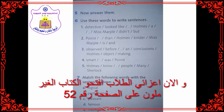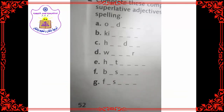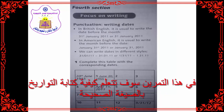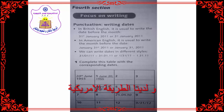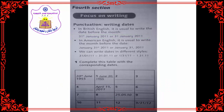Now, my dear students, please open your activity book on page 52. We will work with exercise number 1. In this exercise you will learn how to write dates in the correct way. We have two ways of writing dates — a British rule and an American rule. In British English, we usually write the date before the month; for example, the 31st of January, and then the year.